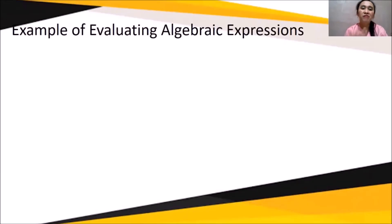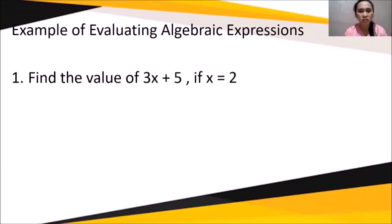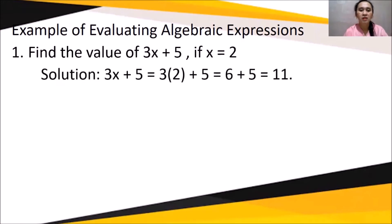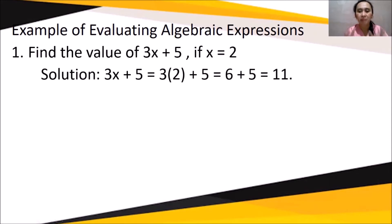Example of evaluating an algebraic expression: find the value of 3x + 5 if x = 2. Solution: 3x + 5 = 3(2) + 5 = 6 + 5 = 11. So the value of 3x + 5 is 11 when x is equal to 2.